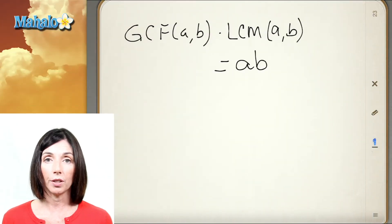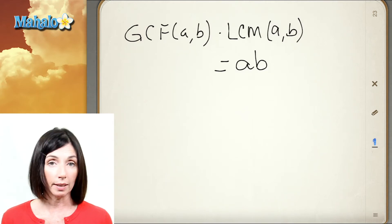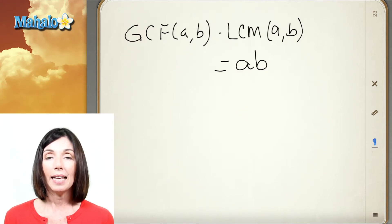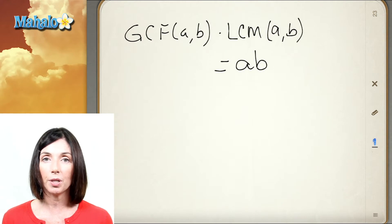There's a theorem that says the greatest common factor of two numbers A and B multiplied by the least common multiple of those two numbers is equal to the product of the numbers itself.